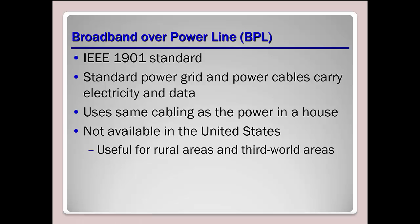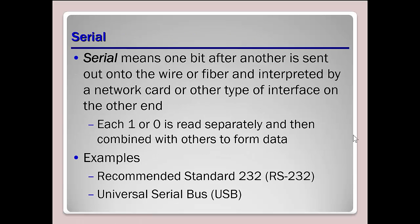Eventually we get to a limit of what that physical cable can handle, and that's when we start looking at increasing what wires are coming into the house. Something we haven't really seen come to fruition is broadband over power line — using standard power grid cables to carry electricity and data. Where we do see this used is with some home smart technology.